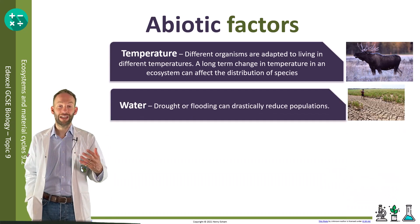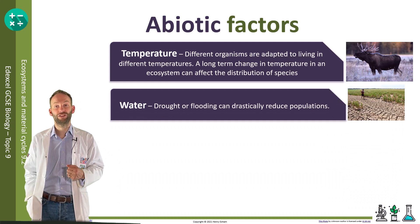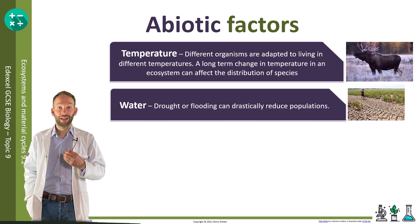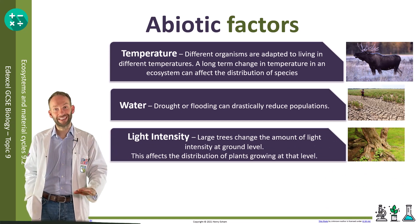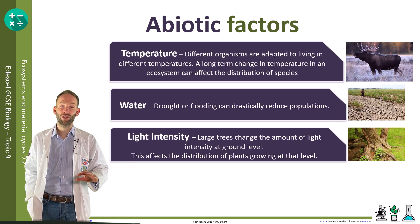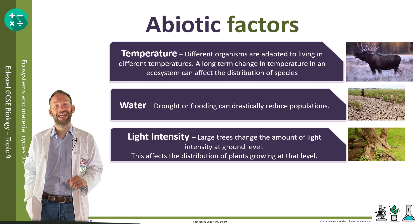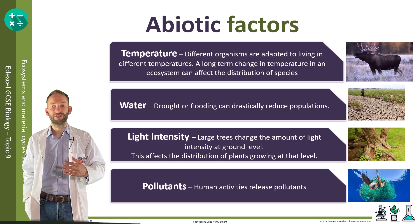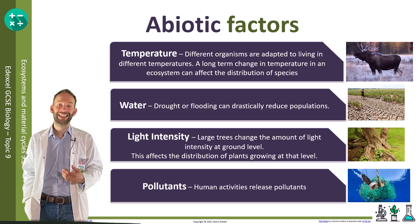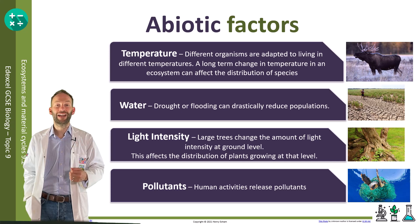Water: drought or flooding can drastically reduce population size. Light intensity: large trees change the amount of light intensity at ground level, which will affect the distribution of plant species growing at that level. And pollutants: human activities release pollutants — for example, the increase in plastics in the ocean has affected fish populations.